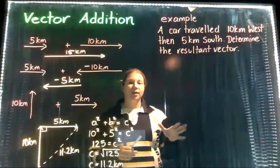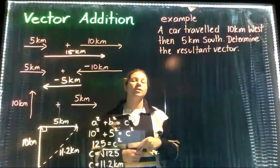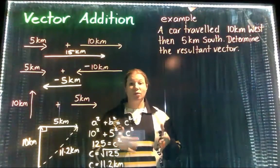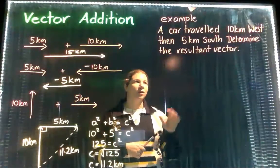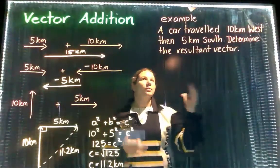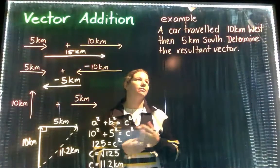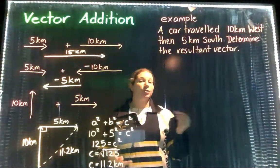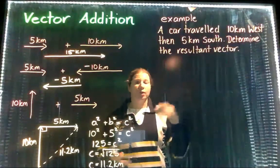I'd like to go through another example with you because sometimes when we do this, the angle that we end up with actually isn't the resultant direction. This example will show you that clearly. Here we have an example: a car traveled 10 kilometers west then 5 kilometers south. Determine the resultant vector. The first thing we want to do is draw a diagram so we know where we are heading.